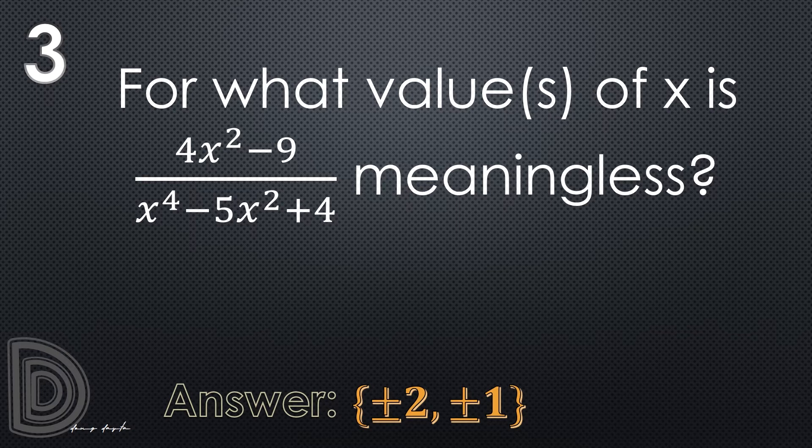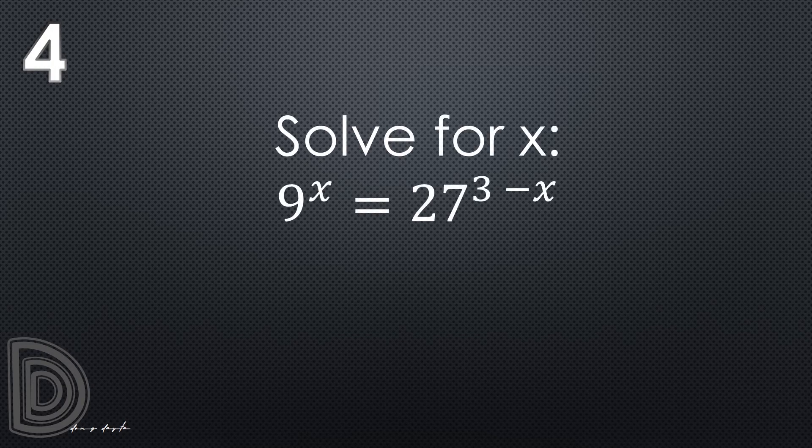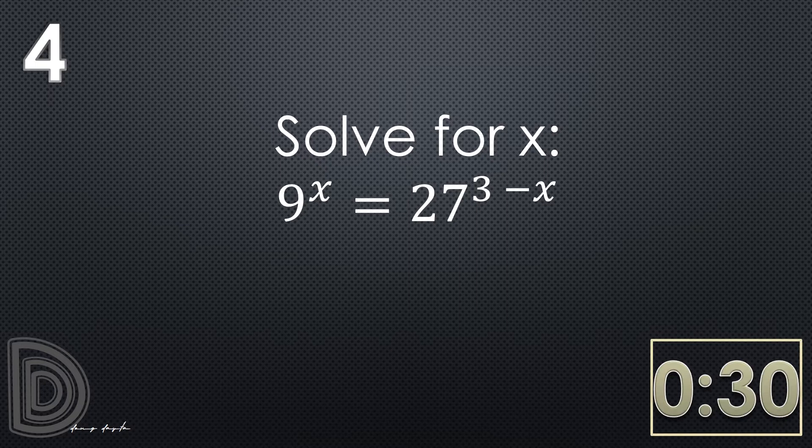Let us go to question number 4. Ready? Solve for x in the equation 9 raised to x equals 27 raised to 3 minus x. Again, solve for x in the equation 9 raised to x equals 27 raised to 3 minus x. In 30 seconds, go!